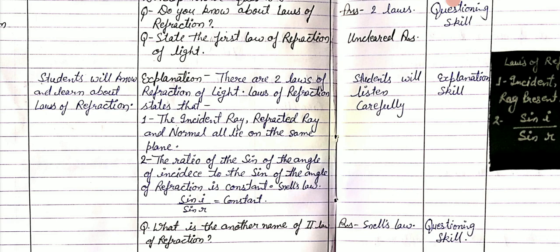There are two laws of refraction of light. First: the incident ray, refracted ray, and normal all lie on the same plane. Second: the ratio of sine of the angle of incidence to sine of the angle of refraction is constant. This is called Snell's law.